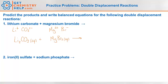So we just swap the carbonate with the bromide. Lithium goes with bromide giving LiBr, which is aqueous since lithiums are soluble. And magnesium with carbonate gives MgCO₃. Carbonates are generally insoluble or solid, so this is a precipitation reaction because we formed a precipitate.